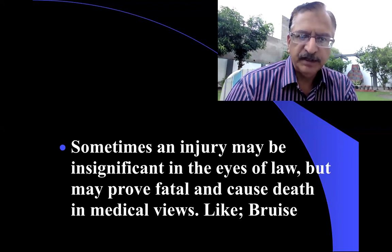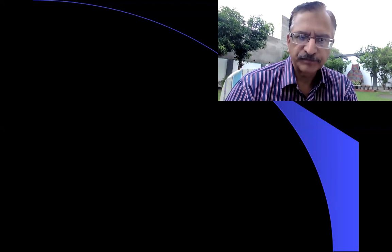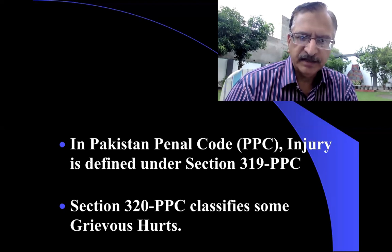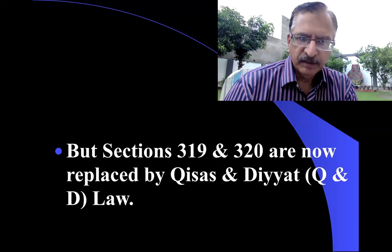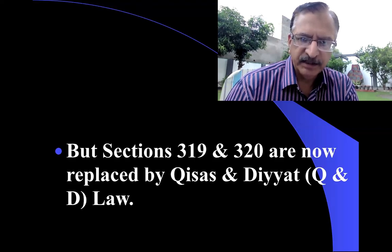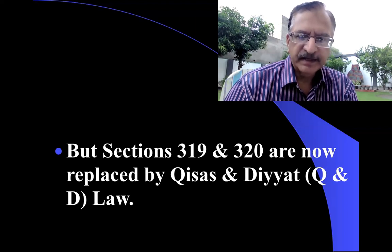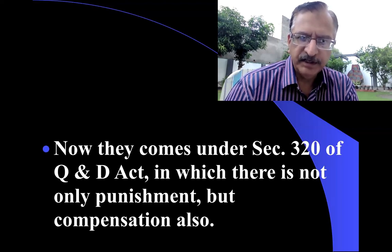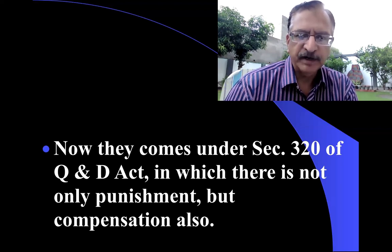Injuries have to be recognized and declared in legal terms according to the provisions of law. Legal definitions are comprehensive and cannot be changed, so they should be reproduced without alteration. Sometimes an injury may be insignificant in the eyes of law but may prove fatal and cause death in medical views — like a bruise. In Pakistan Penal Code, injury is defined under Section 319, and Section 320 classifies grievous hurts. But Section 319 and Section 320 are now replaced by Kisas and Diyat law, which comes under Section 320 of the Kisas and Diyat Act — including not only punishment but compensation also.